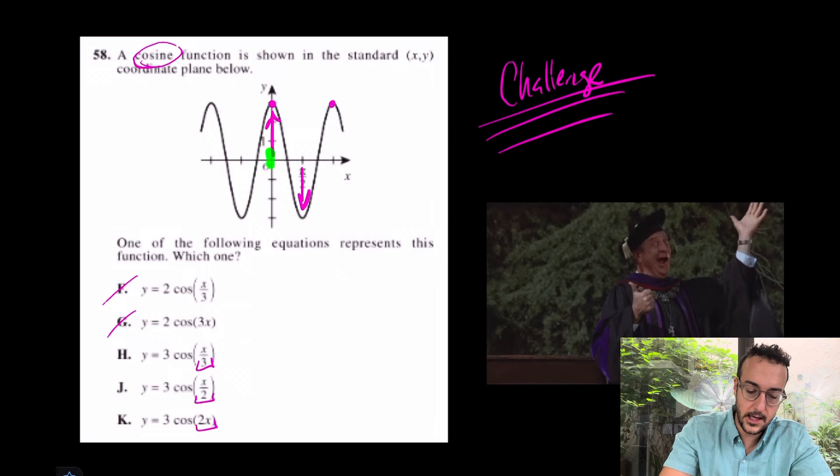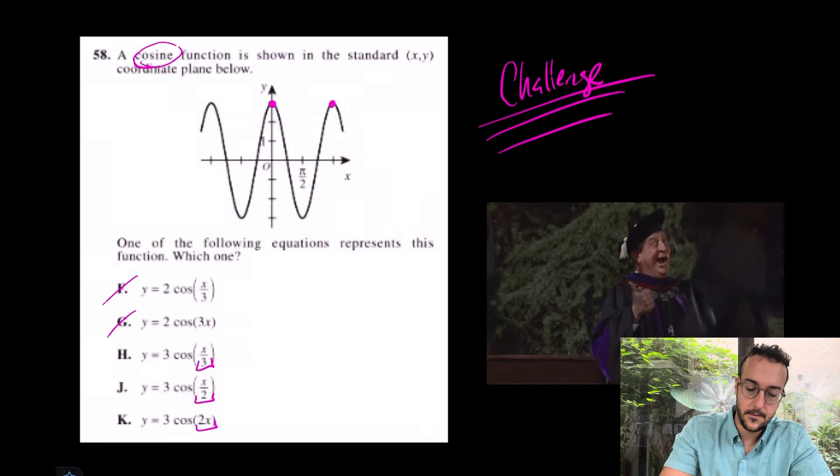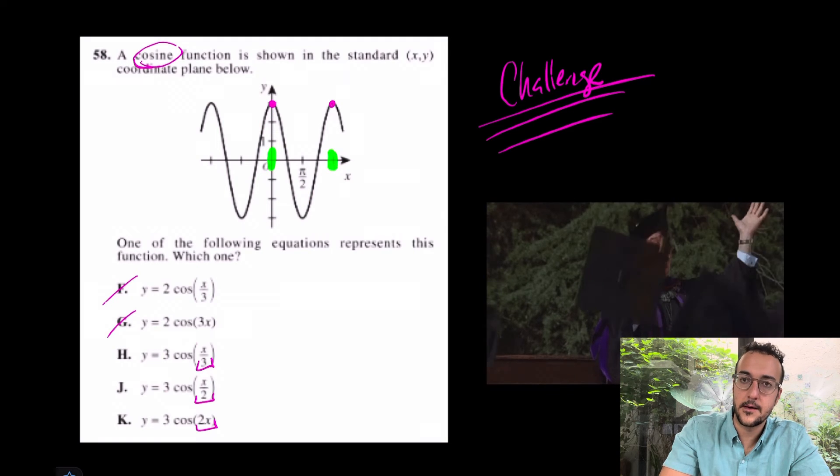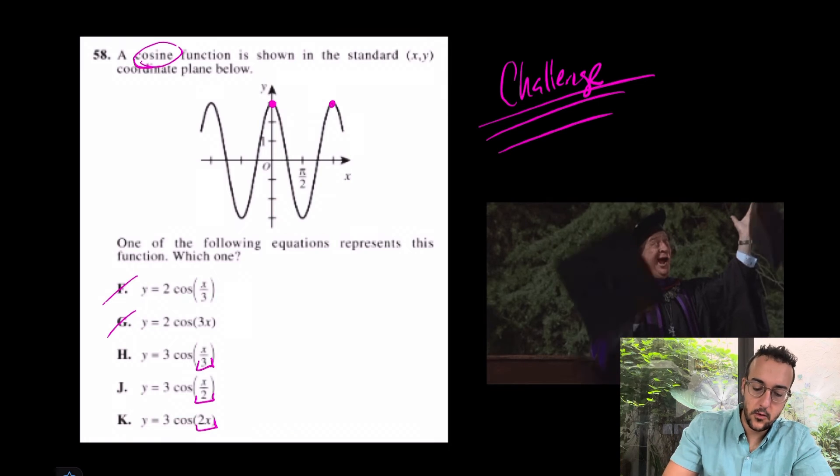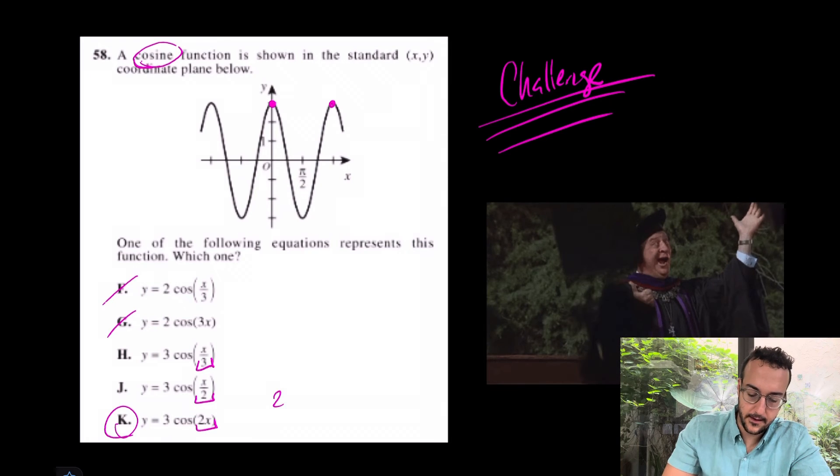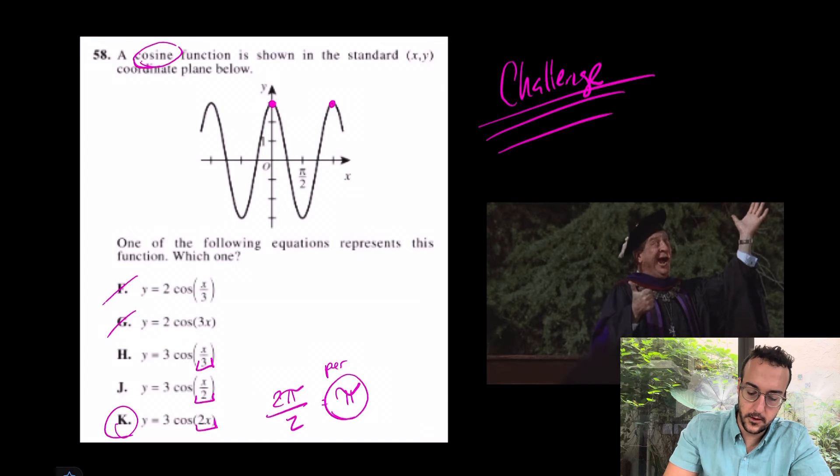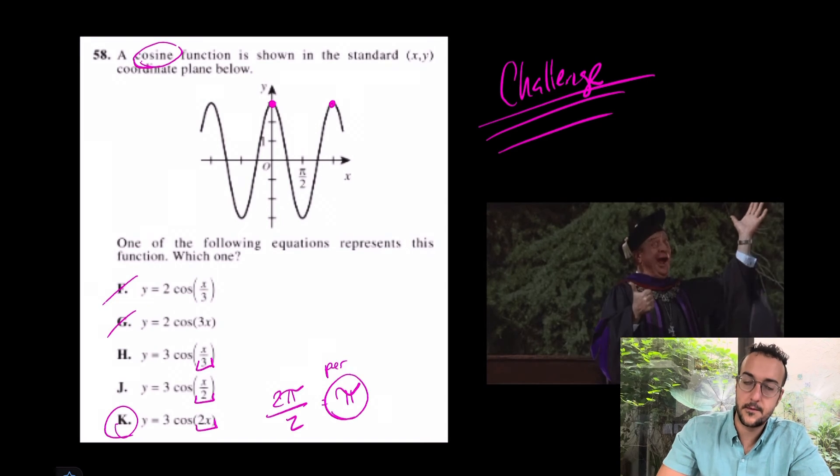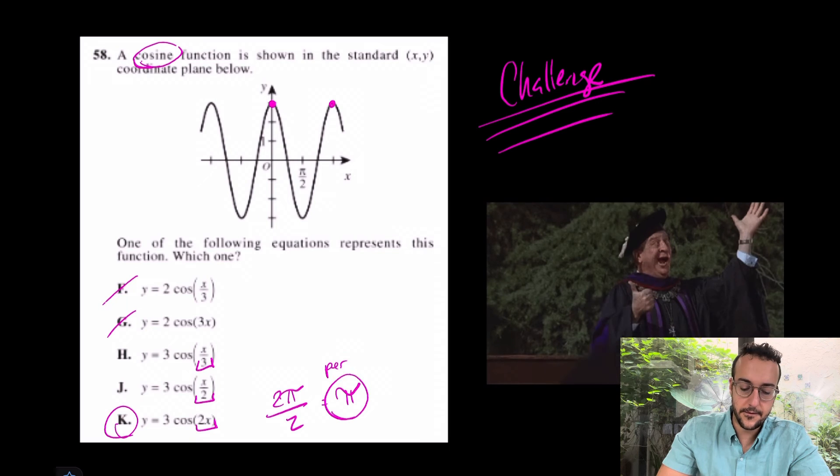Well, notice it was finishing every π. Again, it was finishing every π. So which one of these would work? Well, I really like K because 2π over B dictates that the period will just be π. So the answer is definitely K.